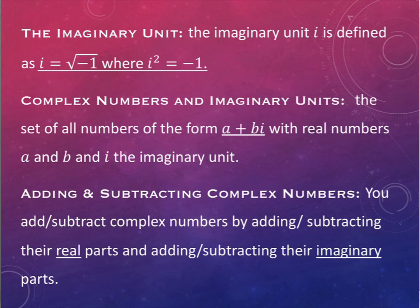Complex numbers and imaginary units are related as follows. The set of all numbers that have the form a plus bi are called complex numbers. a and b are real numbers, so just the numbers you've been working with since you were little, right?